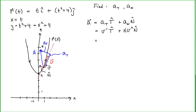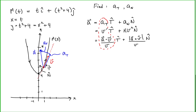We can equivalently express these components using vector multiplication. The tangential component is the dot product of the acceleration with the velocity vector divided by the speed of the curve — that is, the magnitude of velocity. The normal component is the magnitude of the cross product between acceleration and velocity divided by the speed of the curve.